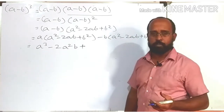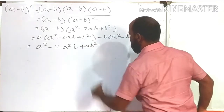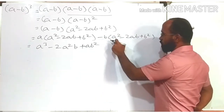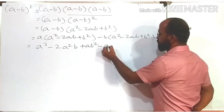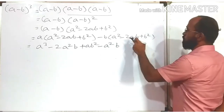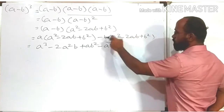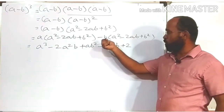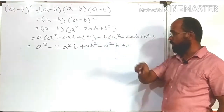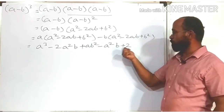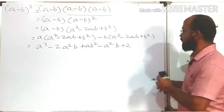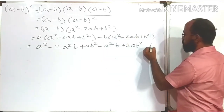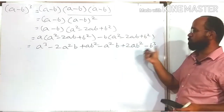Continuing: a × b² gives ab². Now for minus b times the bracket: -b × a² — coefficients are both 1, so the result is -a²b. Then -b × (-2ab): 2 × 1 = 2, and minus times minus gives plus, so +2ab²; b × b gives b², so the variable part is ab². Finally, b² × b gives b³, and plus times minus gives minus, so -b³.